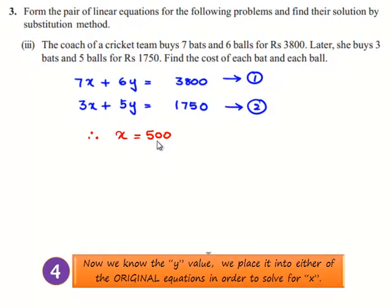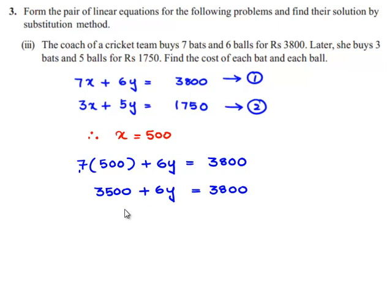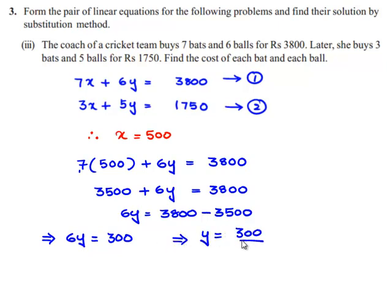The value of x is 500. Substituting the value of x in equation number 1: 7 times 500 plus 6y is equal to 3800. So 3500 plus 6y is equal to 3800. Transposing 3500, we get 6y is equal to 3800 minus 3500, which is 300. So y is equal to 300 divided by 6, which gives y equal to 50.